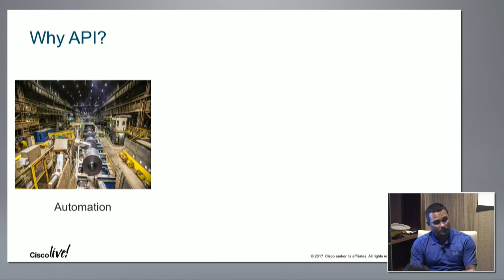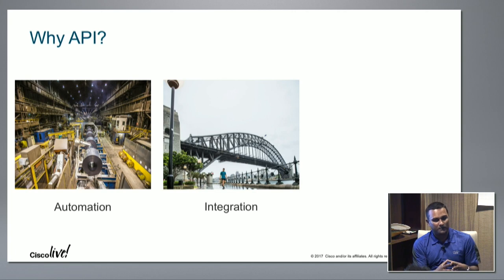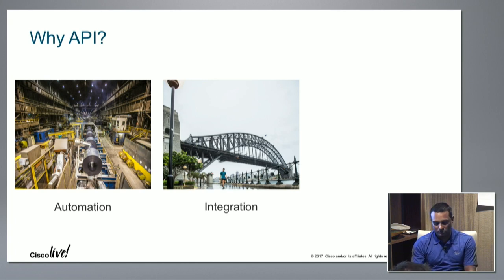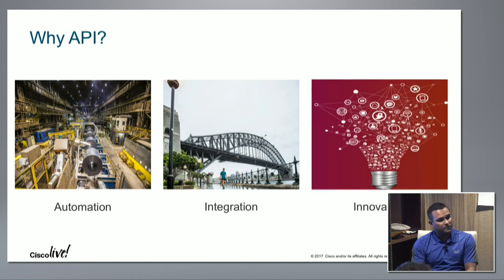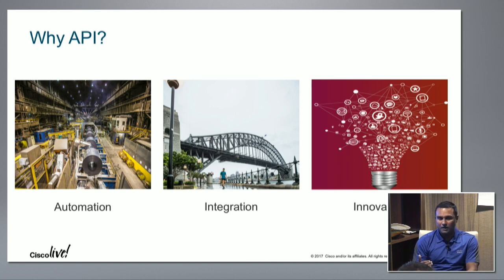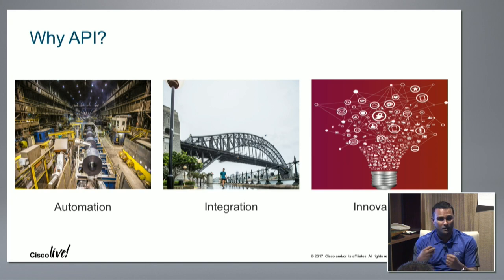That's one automation use case. Similarly, there's an integration use case: APIC-EM manages Cisco network devices, but what happens when you want to integrate with Microsoft Skype for Business or Infoblox for getting IP pools? We need APIs for those integration use cases. And lastly, innovation: although we have apps using those APIs, say Easy QoS has support for configuring policies on the network but we don't have support for time-based policies — for example, a certain policy from 1 p.m. to 4 p.m. There's no way to do it in Easy QoS, but we have APIs for all that Easy QoS functionality so you can write your own application to handle it.